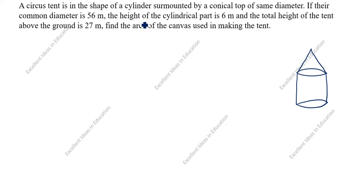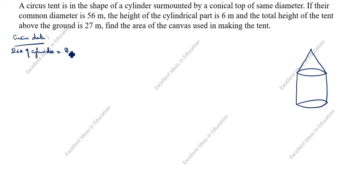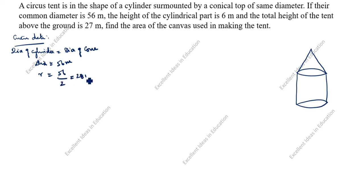The cone and cylinder diameter is the same. The common diameter is 56 meters. The diameter of the cylinder equals the diameter of the cone, which is 56 meters. The radius is equal to 56 divided by 2, which is 28 meters.